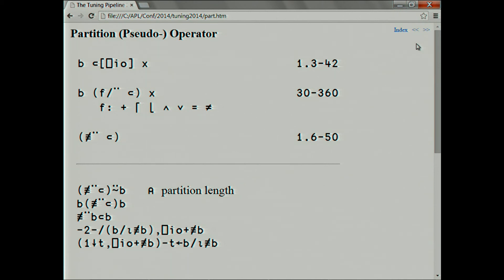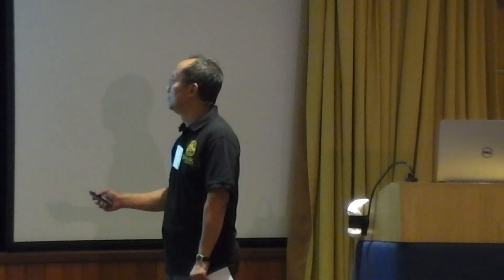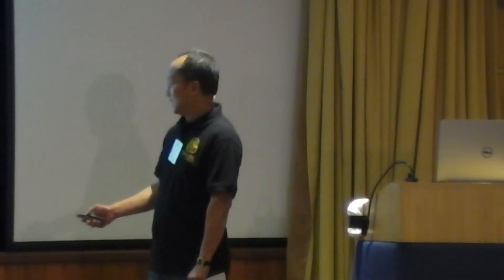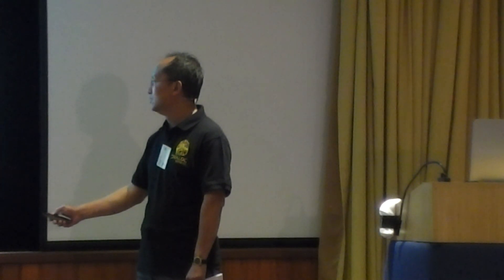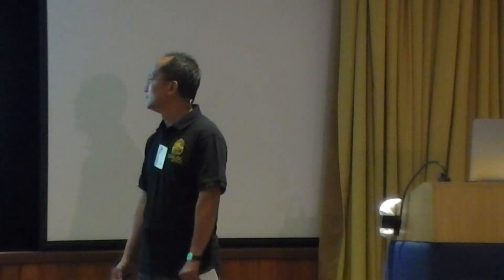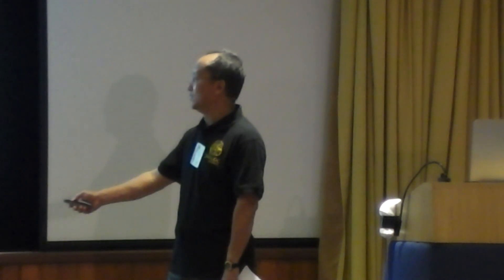Another special case is tally each partition, that's also a 2-train. I get a factor of 1.6 to 50 depending on the data. It's a handy little thing because if you have a Boolean vector that specifies the partitions and you want to find the partition lengths, currently the fastest expression for doing that is rather nasty. But with this special code you can do it with that expression. So it's both shorter and faster and I claim more easily understandable.